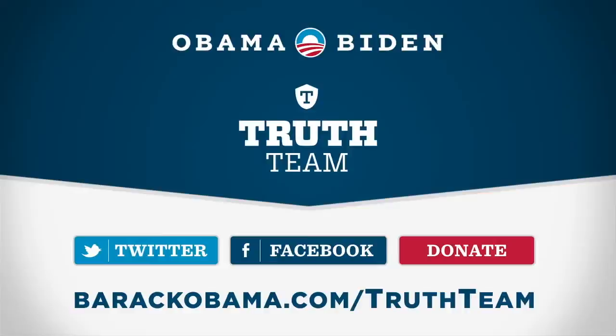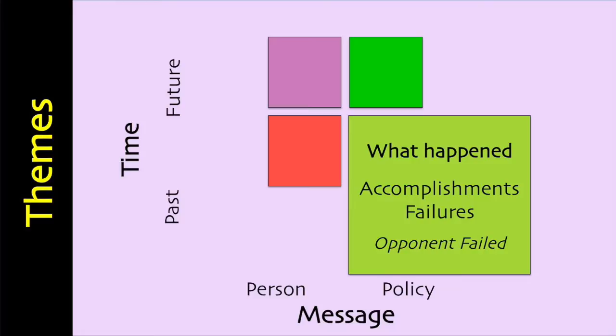Another good strategy is to look at the failures of past policies. Did your opponent fulfill the promises that were made? Did the policies achieve what was promised? In this next commercial, Obama showed America how Romney performed in Massachusetts as governor. Romney's past actions were used to predict what will happen to the USA if Romney is elected president.